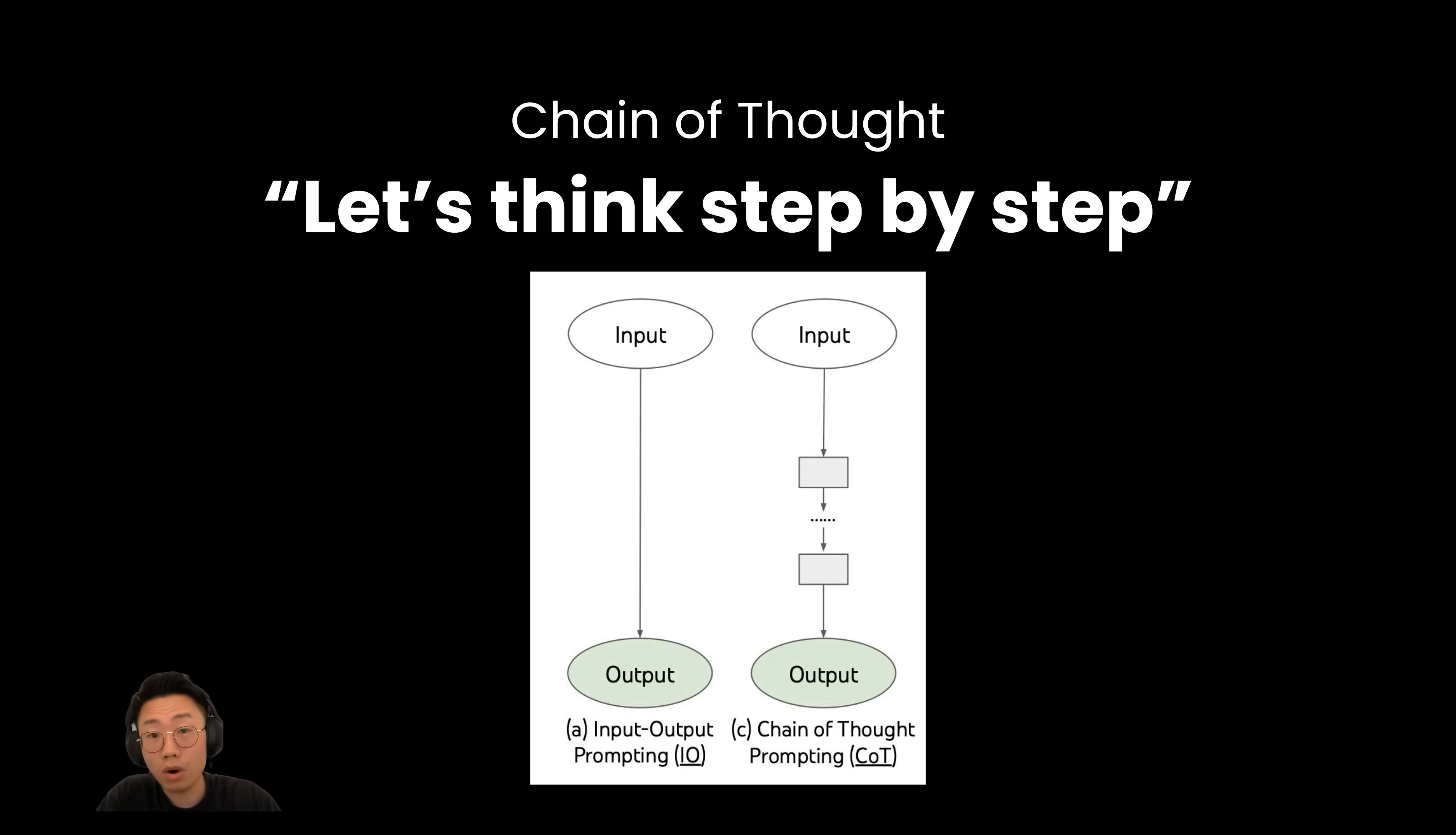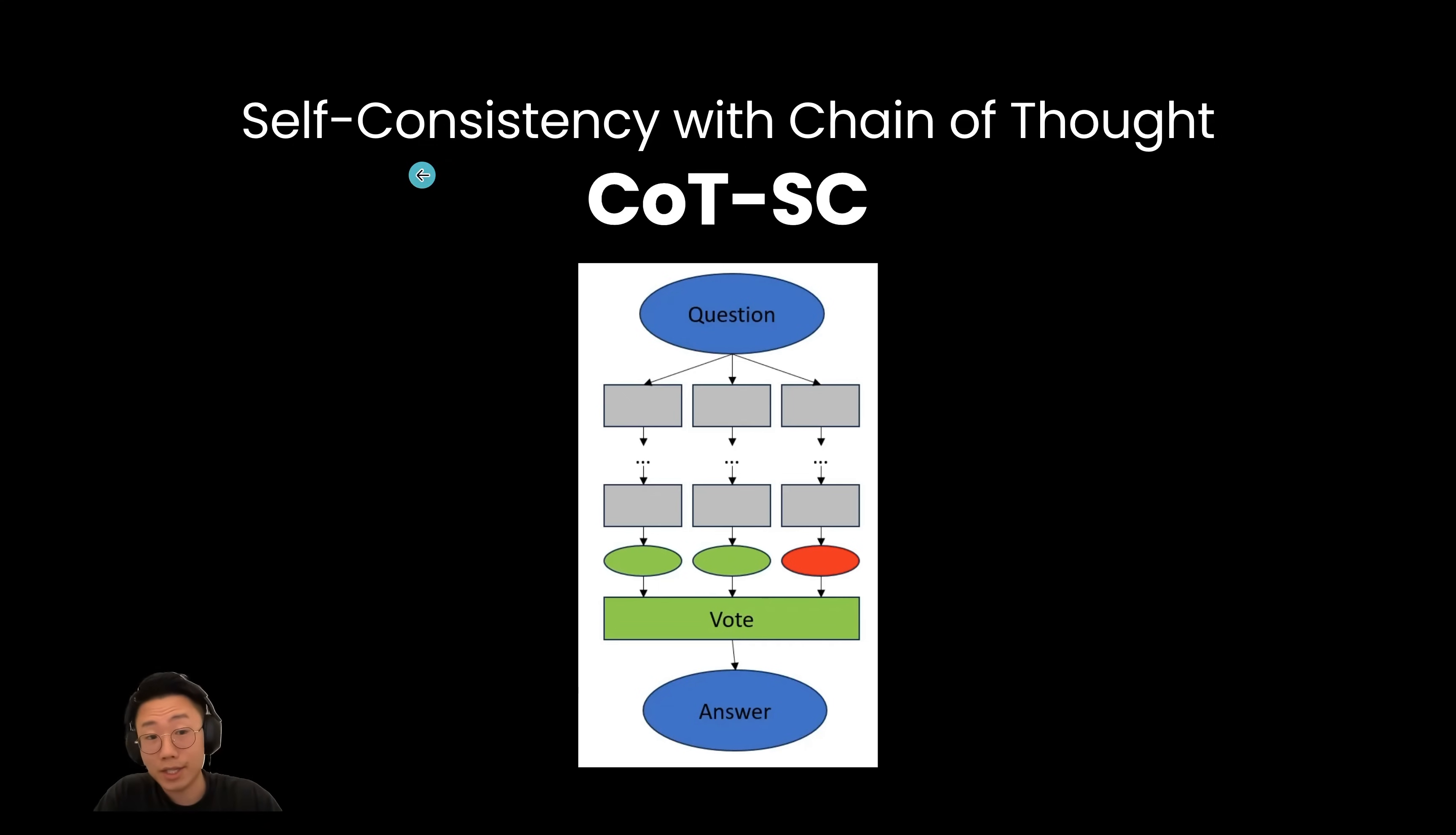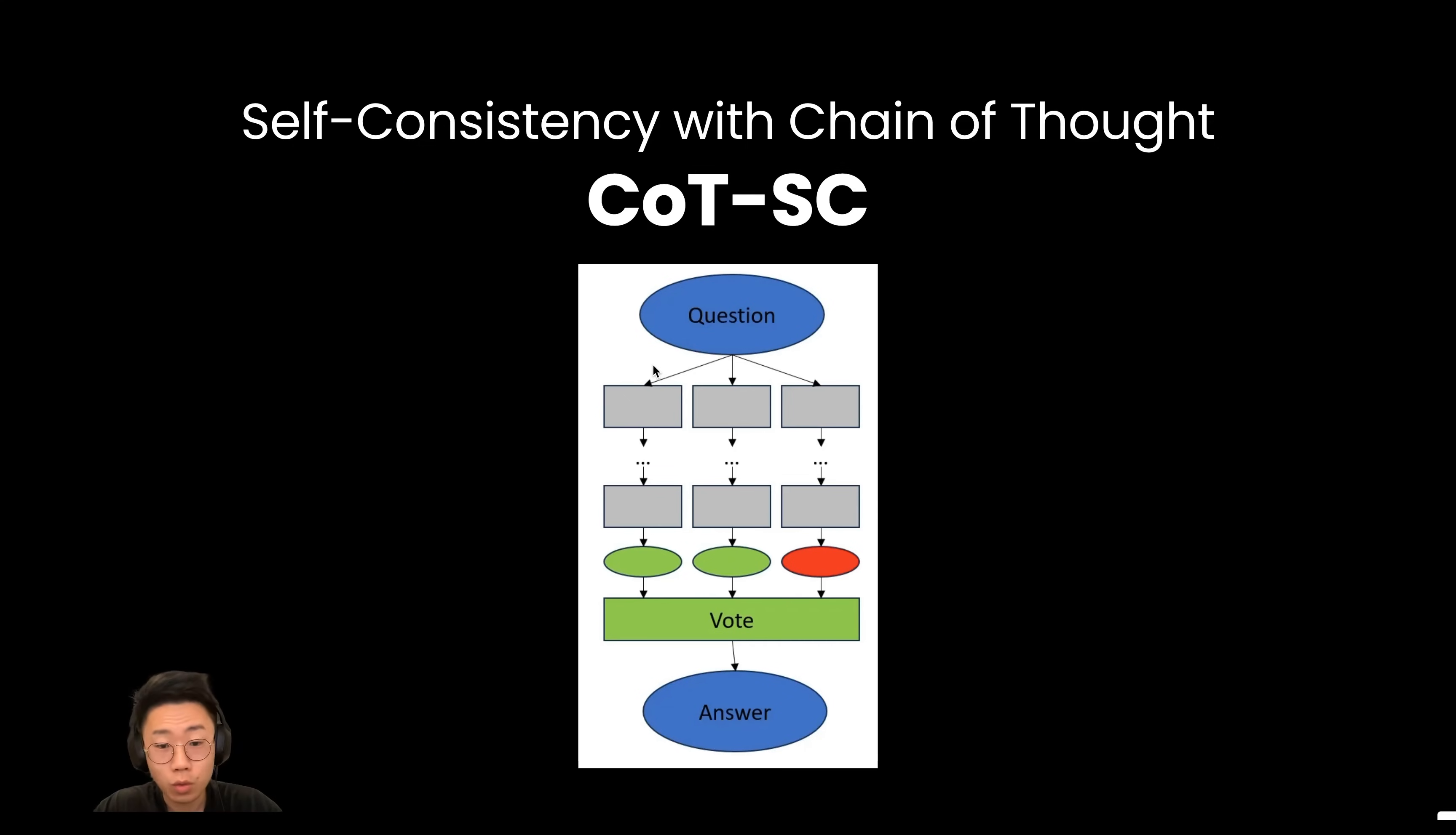That's why people also explore more advanced prompting tactics like self-consistency with chain of thought. The way it works is it gets a large language model to run chain of thought multiple times. And in the end, review and vote on answers that are most reasonable.